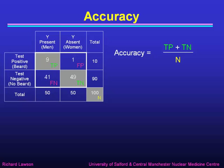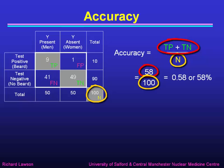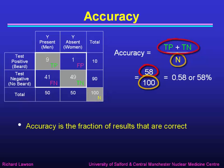Accuracy is another term often quoted in the literature. It is defined as the true positives plus the true negatives — that is, all the correct results — as a fraction of n, the total number of patients. In this case, true positives plus true negatives is 9 plus 49, which is 58 out of 100, giving 0.58 or 58 percent. Accuracy is the fraction of results that are correct, which sounds like a sensible measure, but as we'll see, it's not quite as good as you might hope.